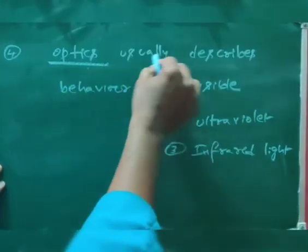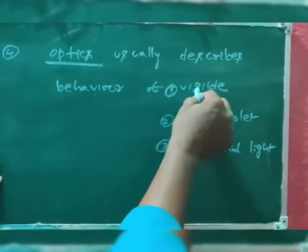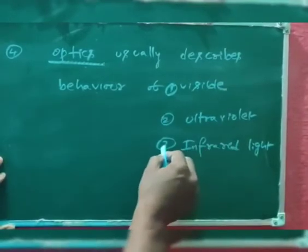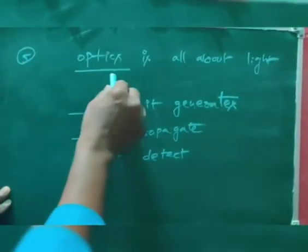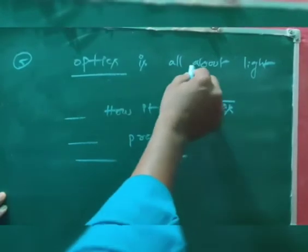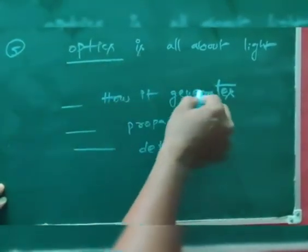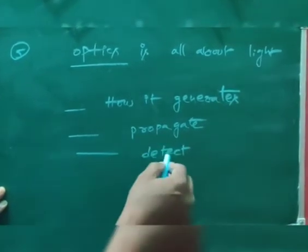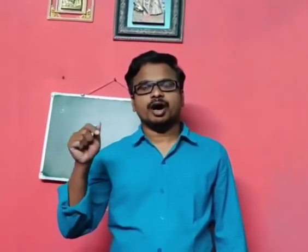Optics usually describes behavior of: one, invisible; two, ultraviolet; and three, infrared light. Optics is all about light — that means how it generates, how it propagates, and how to detect. This is the brief overview of optics.